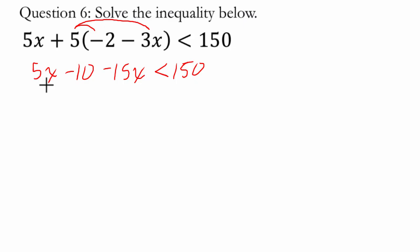Okay, so now I'm going to combine like terms. I've got a 5x here and a negative 15x there. That is negative 10x. We still have our minus 10, less than 150.